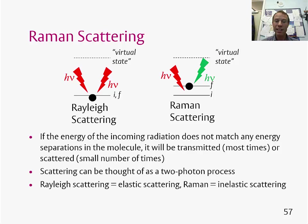Rayleigh scattering is often referred to as elastic scattering, so the energy of the photon which is emitted is the same as the incoming photon. Raman scattering is often described as inelastic scattering, meaning there is some energy transfer between the photon and the molecule.